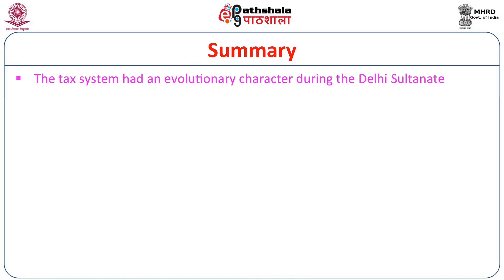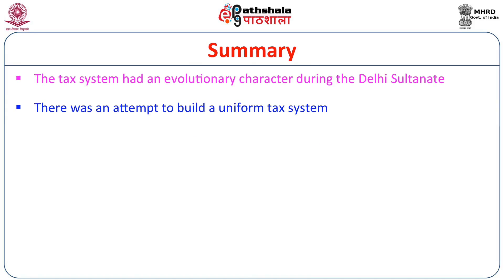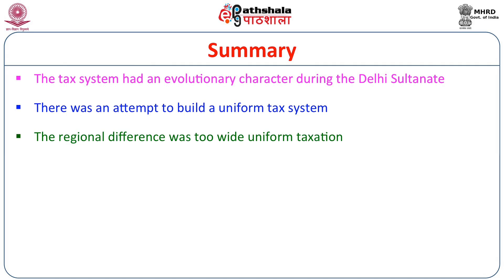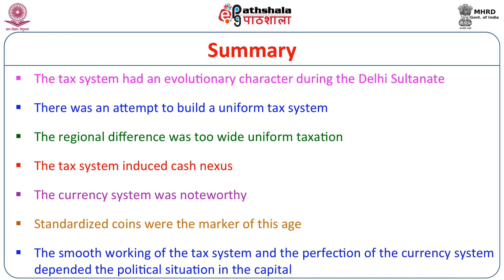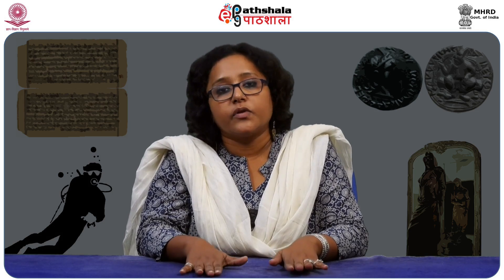To summarise: the tax system had an evolutionary character during the Delhi Sultanate, with attempts to build a uniform tax system, though regional differences were too wide. The tax system induced a cash nexus since tax was expected in cash, making the currency system noteworthy. Standardized coins were the marker of this age, and the smooth working of the tax system and the perfection of the currency system depended on the political situation in the capital. Thank you for your patient listening; you can refer to the e-text for further references.